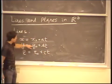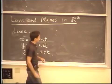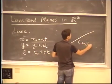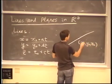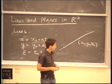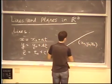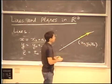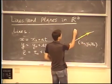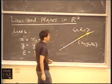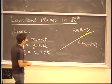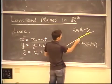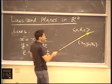Where these numbers are given: x0, y0, z0 are coordinates of a particular point on this line, and a, b, c is a particular vector which goes along this line — we call it a direction vector. So each of the coordinates is written as a function of t, and this gives us an explicit parameterization of this line.